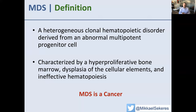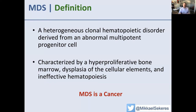So that's what we mean by that complex definition. Mutations occur in cells causing them to grow a lot — they take over the bone marrow space. It's a hyperproliferative bone marrow, but the cells are abnormal. That's what dysplasia means: 'bad growing.' So myelodysplasia means bad-growing myeloid cells, and as a result, people have fewer blood cells in their bloodstream.